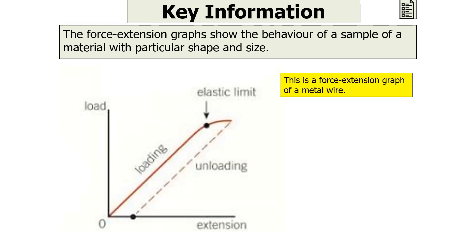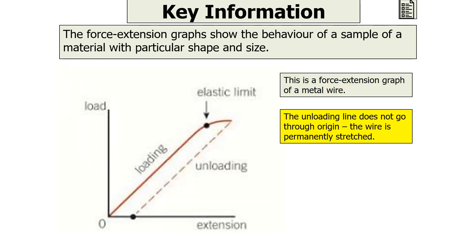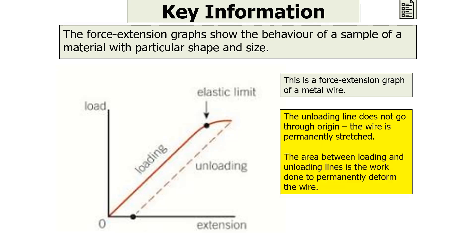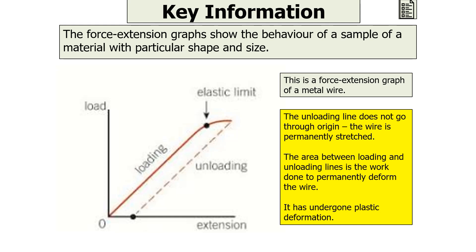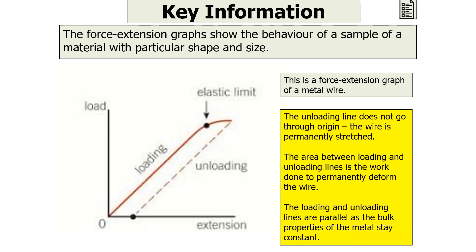This force extension graph is for a metal wire. The unloading line does not go through the origin, indicating that the wire is permanently stretched. The area between the loading and unloading lines is the work done to permanently deform the wire, as the wire has undergone plastic deformation. It's also important to note that the loading and unloading lines are parallel, as the bulk properties of the metal stay constant through the loading and unloading process — the metal has the same spring or stiffness constant.